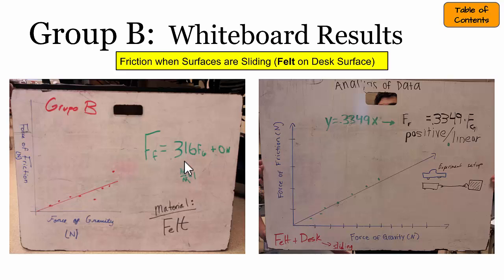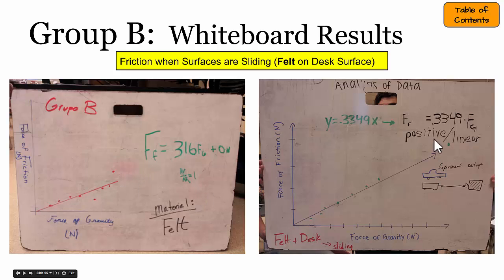Group B investigated how big the frictional force is while objects are sliding with respect to one another, but here they used the felt surface on the desk. They found that the force of friction was even smaller for the same given amount of weight, and they also found a linear relationship. Their slope values were about 0.3, or about a third of the weight.